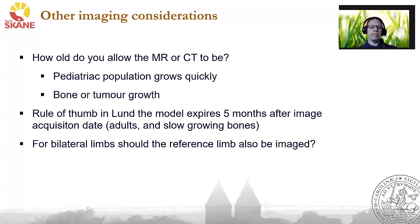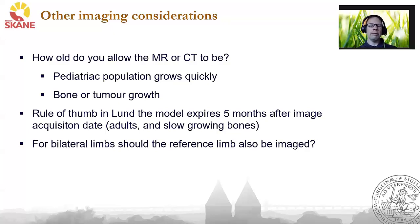Other imaging considerations: how old do you allow your MR and CT image to be? For the pediatric population, they grow quickly. For bones or tumors, they may grow. As a rule of thumb in Lund, the model expires five months after image acquisition — this is for adults and slow-growing bones, and can be much shorter in other cases. Another consideration: for bilateral limbs such as the arms, if there is deformation in one — like the radius bone — you also scan the reference limb so you can compare, mirror, and plan from it.